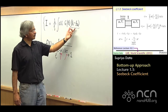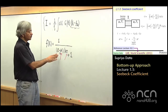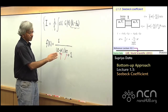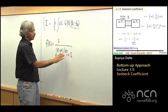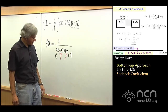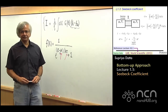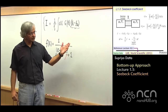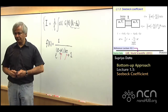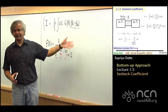With voltages, the Fermi functions differed because it was the electrochemical potential that was different. Now we are talking of the case where the temperatures are different. What I'm going to do now is make this module a little quantitative, so there will be a bit of math.